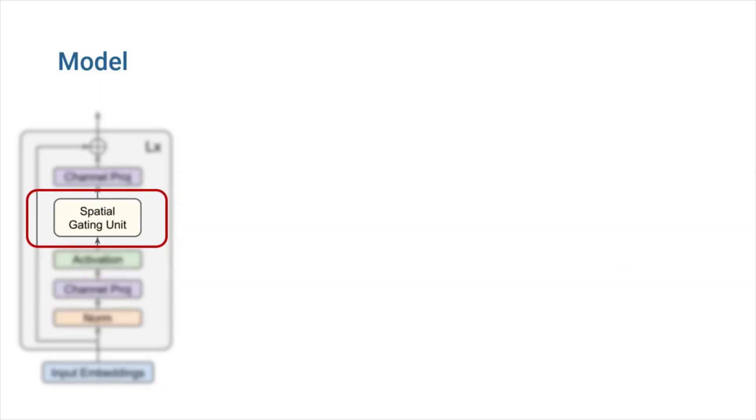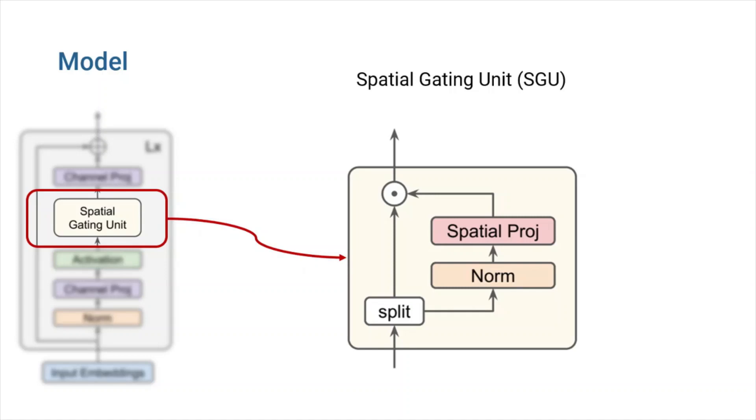The spatial gating unit is where things get more exciting. Here are the components of the spatial gating unit or SGU. First, the input Z is split into two independent parts, Z1 and Z2. Then, Z2 goes through some modifications.